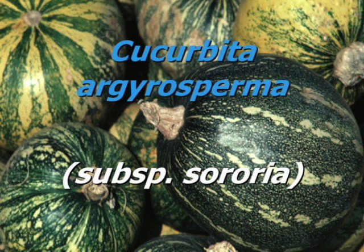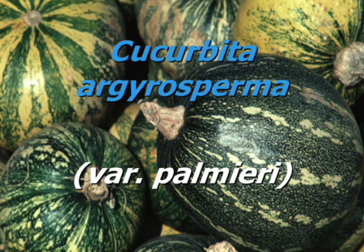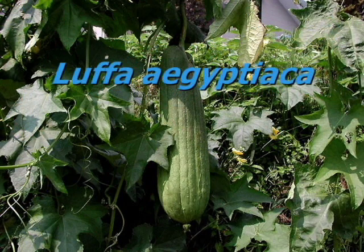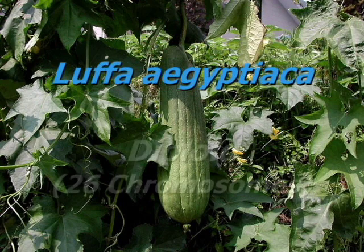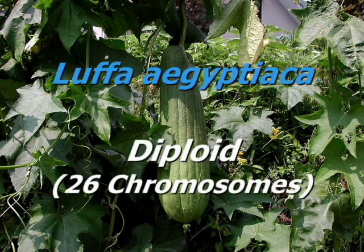Another wild relative that it can cross with is Cucurbita argyrosperma palmieri. Luffa aegyptiaca, the luffa gourd, is diploid with thirteen pairs of chromosomes. This gourd, valued for its spongy seed matrix, originated in India.